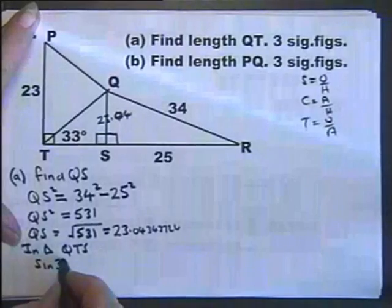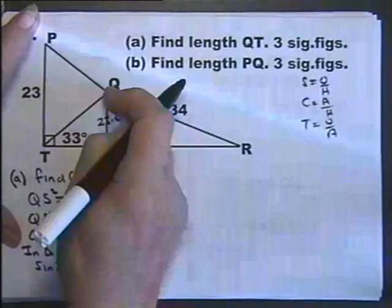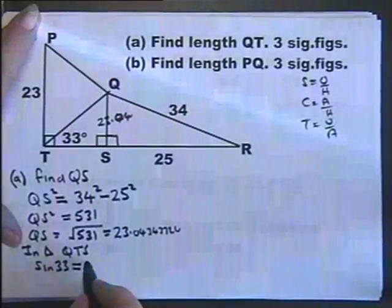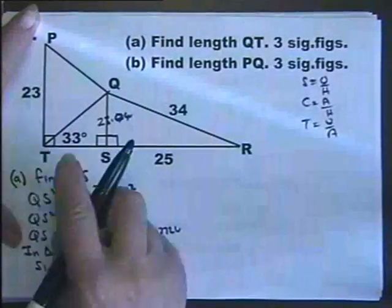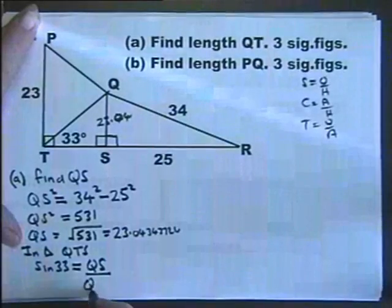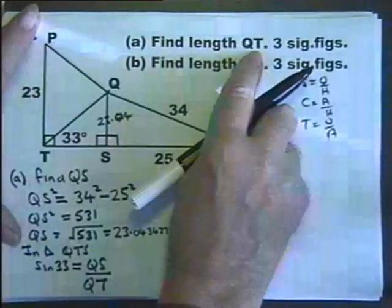So the sine of 33 equals the opposite, which I'm going to write down as QS, which means I'm going to use that value, over QT, which is in fact what the question is.